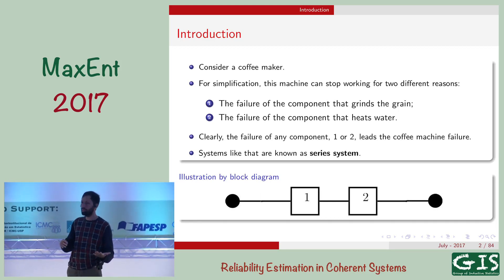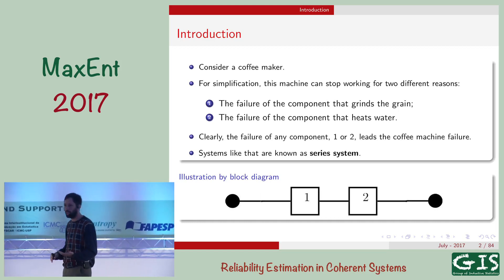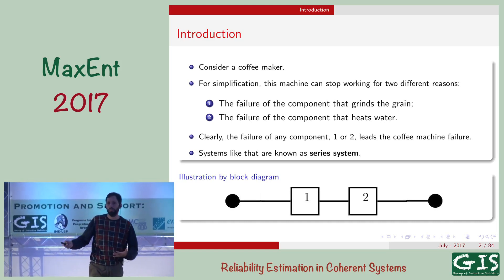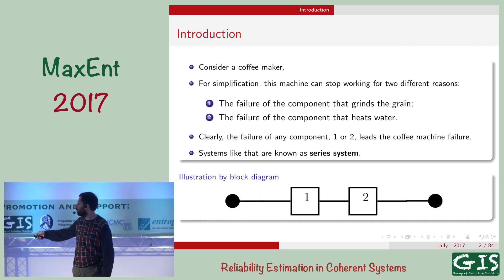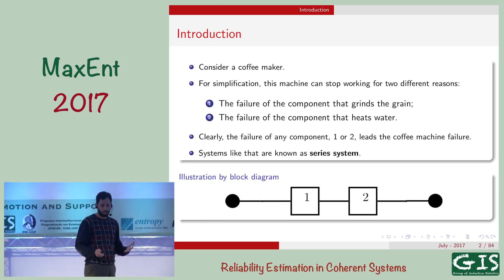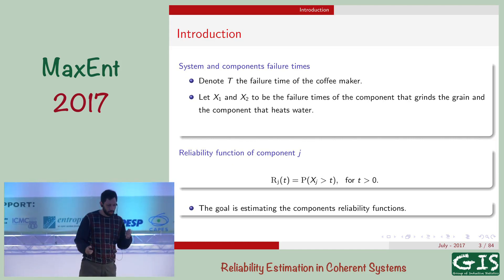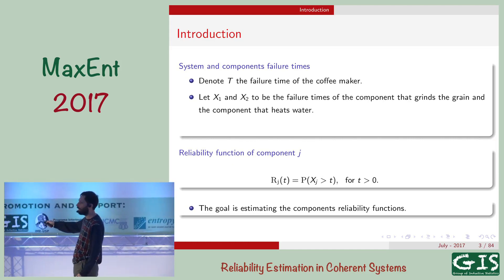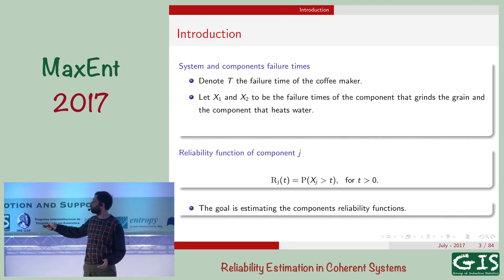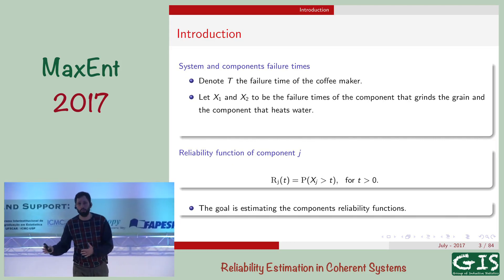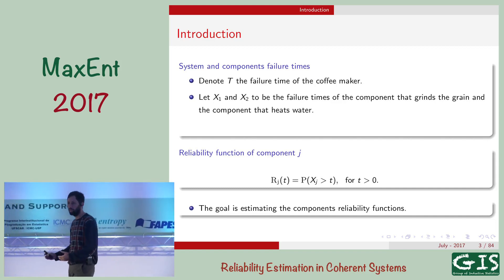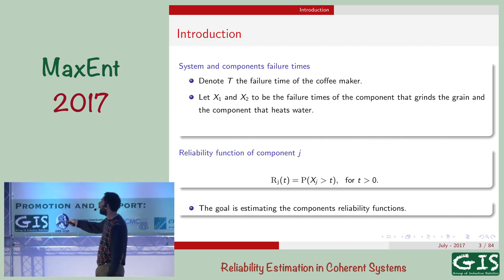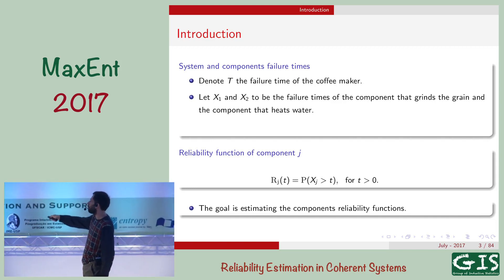But not only this — if the first component is broken, I cannot observe the failure of the second component. This is the problem here. We call these series systems in the language of reliability. In survival analysis language, you might call this a competing risk model. The main idea: we have the time of the system, and we are interested in understanding this failure time.